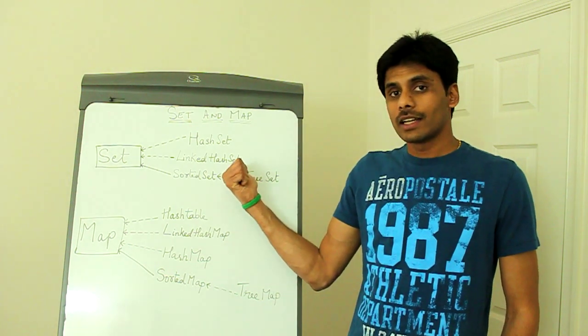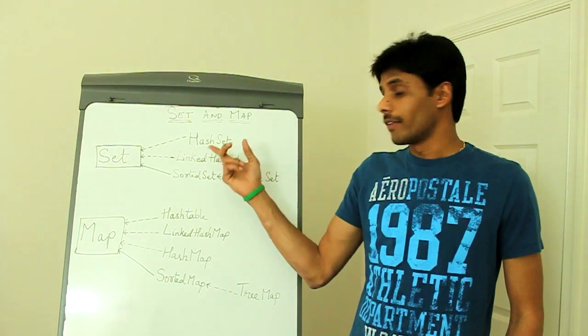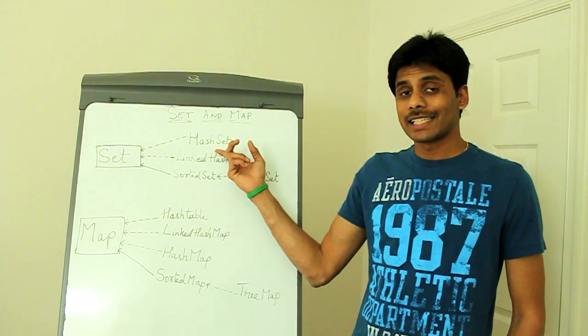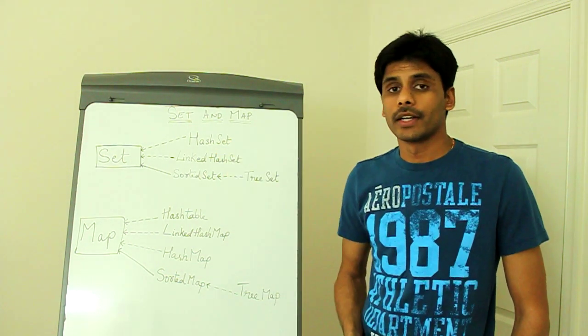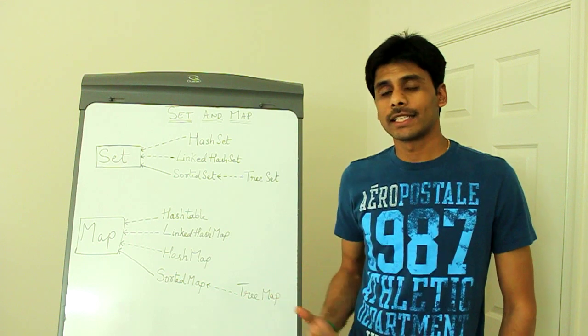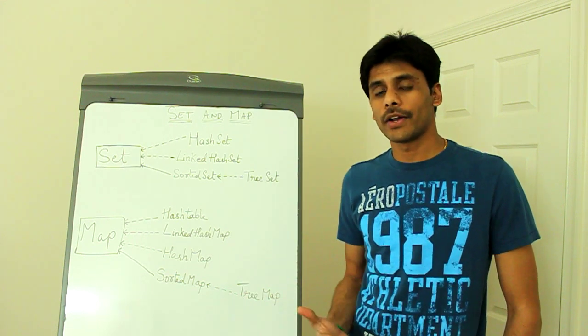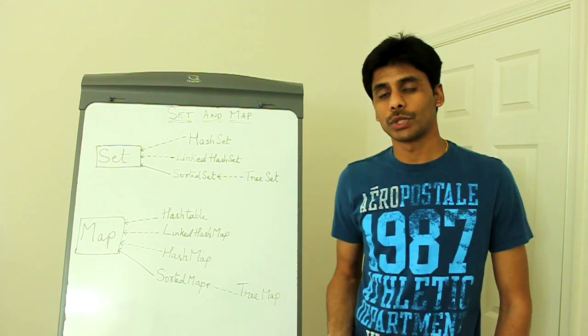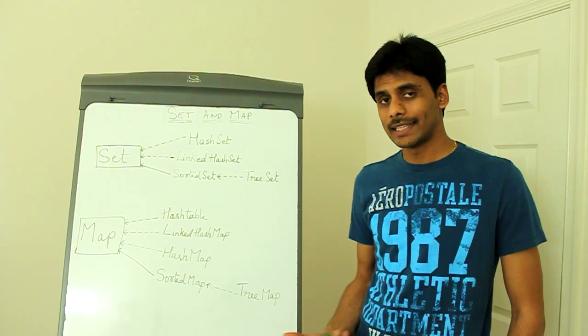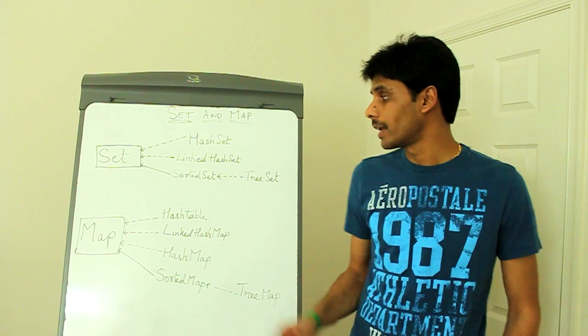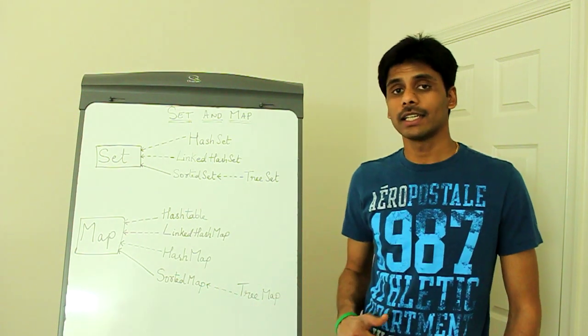A LinkedHashSet is ordered whereas a HashSet is not ordered. The HashSet doesn't maintain the order of elements in which you add them, whereas a LinkedHashSet does.